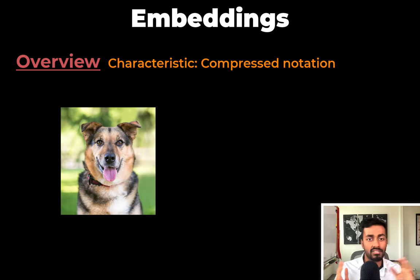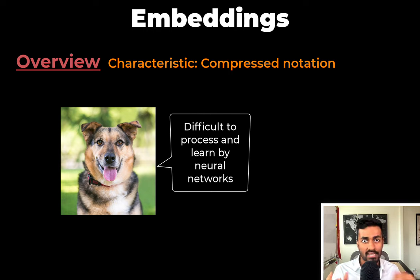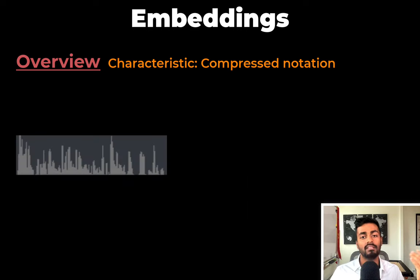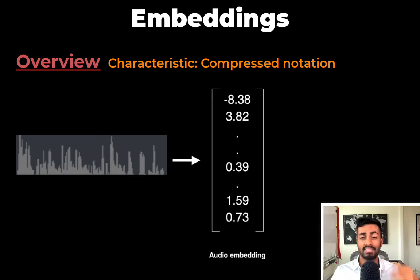This also extends to images. Raw images represented by RGB pixel values alone can be difficult to directly process and learn by neural networks. Hence, they are transformed into smaller internal representations. Raw audio too is typically in the form of a stream of samples or data points — far too big to process. Hence, some compressed notation, like embeddings, becomes useful.